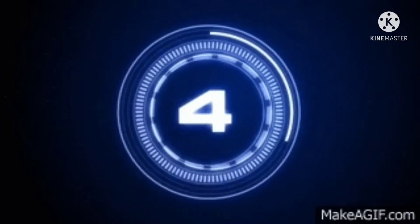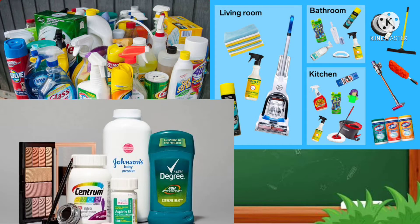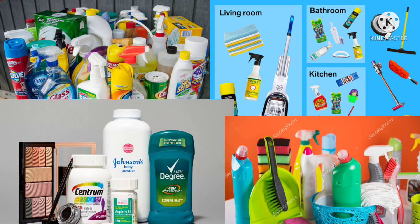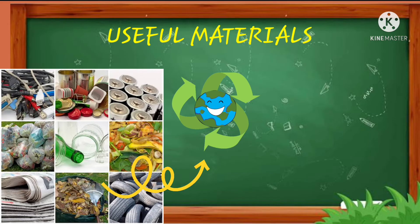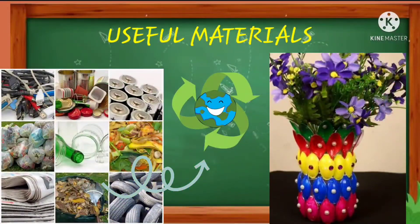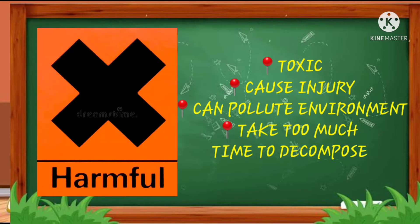Now let's discuss your module briefly. Various household products are found in our homes. These are composed of different materials with different properties. It is therefore important for consumers to read product labels. Through product labels, consumers become aware of whether the product is harmful or not. Useful materials are those that can be used for other purposes, can be recycled, can be dumped straight into a landfill, and something can be recovered from them. Harmful materials, on the other hand, are toxic to us, can cause injury, cannot be dumped straight into a landfill, can pollute the environment, and take too much time to decompose.